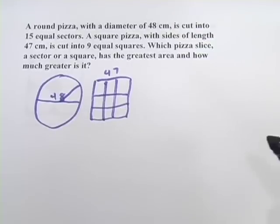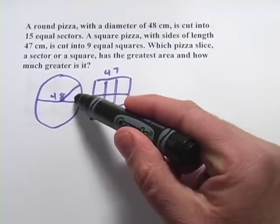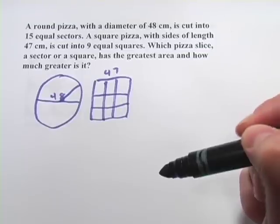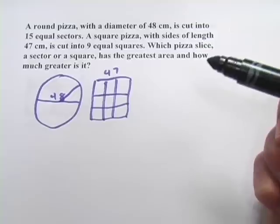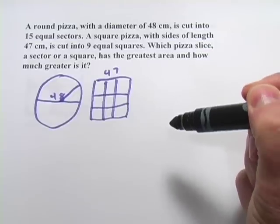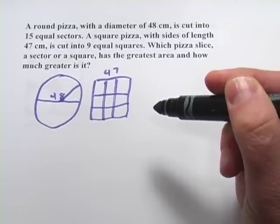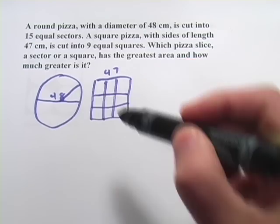And you have a choice. You're going to grab one of these sectors or one of these squares. Which one's going to give you the most pizza? Of course you want to know, so you're going to do some quick calculations before you take your pizza.